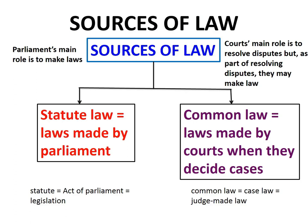You'll recall that we have been looking at the different sources of law. There are two sources of law. First, there is law made by the courts when they decide cases — this is called common law. Common law consists of precedents, that is legal rules or principles, made by judges when they are dealing with a new case that is not covered by existing legal rules or principles.